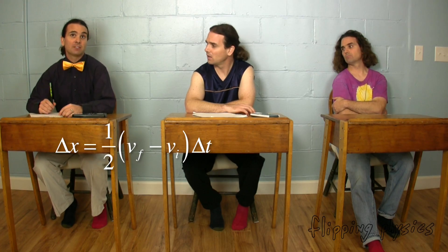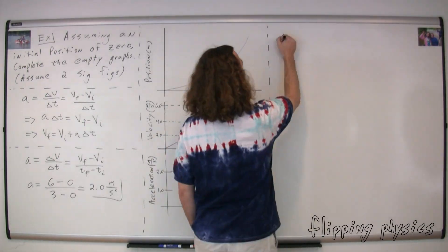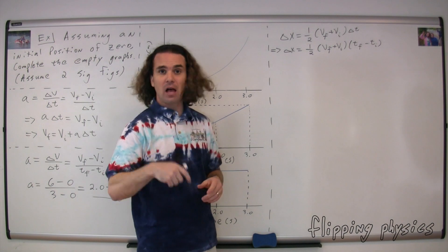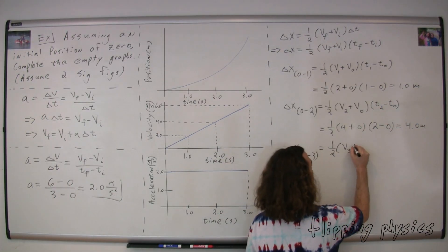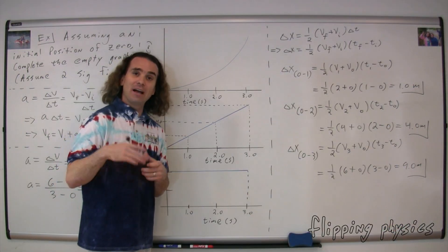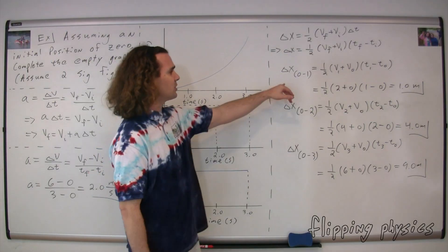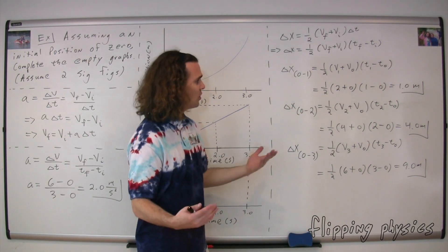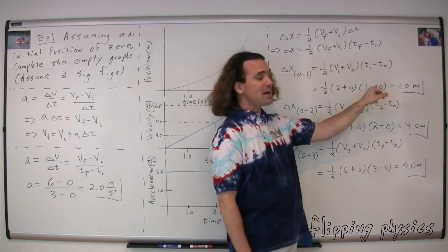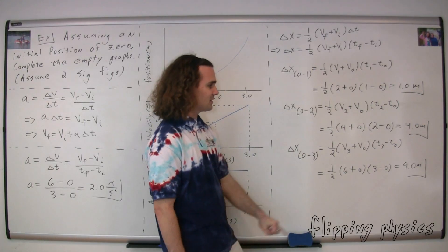It's UAM. We can use the UAM equation: displacement equals one-half times the quantity of velocity final plus velocity initial, times the change in time — where the change in time is time final minus time initial. I chose three different displacements to solve for: from zero to one second, from zero to two seconds, and from zero to three seconds. The displacement from zero to one second is one-half times the quantity two plus zero, times the quantity one minus zero, giving us 1.0 meter. Doing the same thing from zero to two seconds gives four meters, and from zero to three seconds gives nine meters.